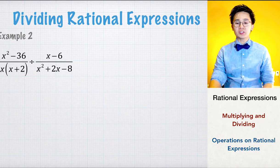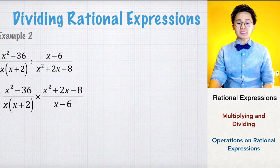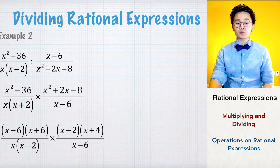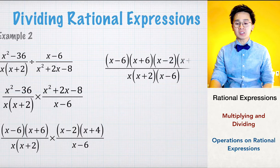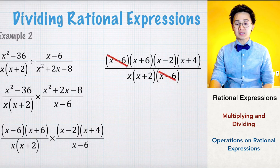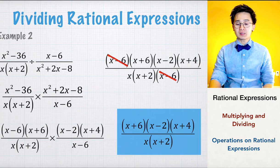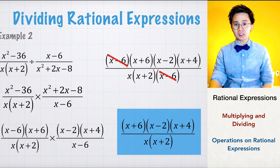In the second division example, we copy the first fraction and multiply by the reciprocal of the second. We simplify x squared minus 36 as a difference of two squares, and factor x squared plus 2x minus 8 as a factorable quadratic. After combining numerator and denominator, we cancel x minus 6 as a common term. The remaining factors cannot be canceled, so the quotient is x plus 6 times x minus 2 times x plus 4 all over x times x plus 2.